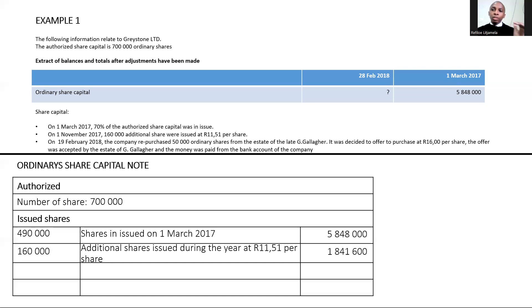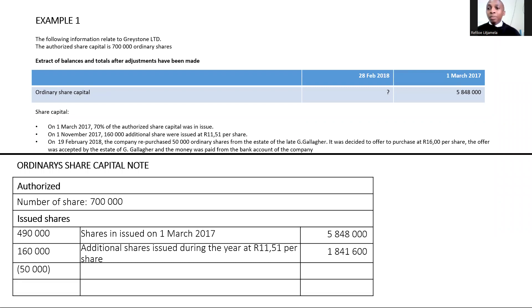When we buy back shares, the issuing increases the number of shares issued and the buying back decreases it. The 50,000 repurchased shares will reduce shares issued. Share capital will decrease — remember, share capital increases and decreases at original cost price. Don't make the mistake of putting the R16 buyback price into your ordinary share capital; you only record the original cost price.